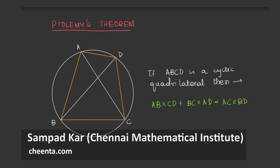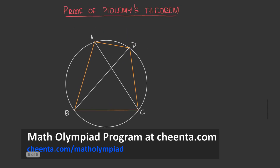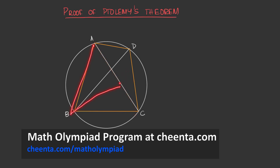Let me give a short interesting proof of the Ptolemy's theorem. Our objective is to relate the sides of this quadrilateral to its diagonals. We make use of a certain construction: I want to find a point K on this diagonal AC such that angle ABK will become equal to angle CBD.